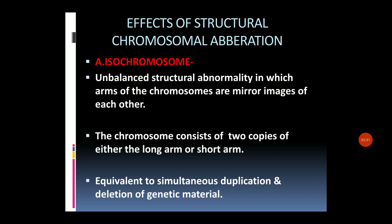What are the effects of structural chromosomal aberration? The first effect is that it leads to the production of an isochromosome. An isochromosome is an unbalanced structural abnormality in which the arms of the chromosomes are mirror images of each other. The chromosome consists of two copies of either the long arm or the short arm, equivalent to the simultaneous duplication and deletion of genetic material.